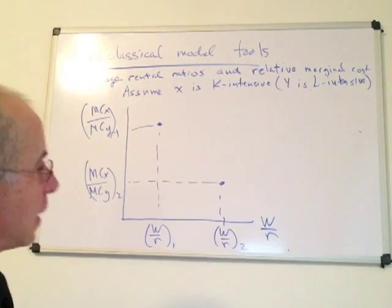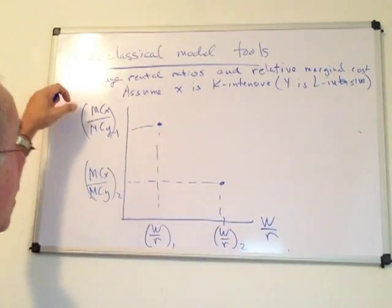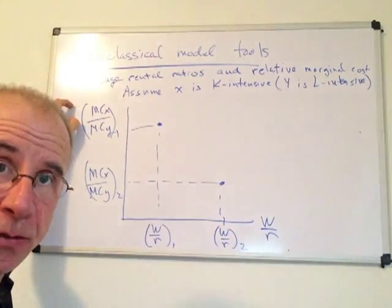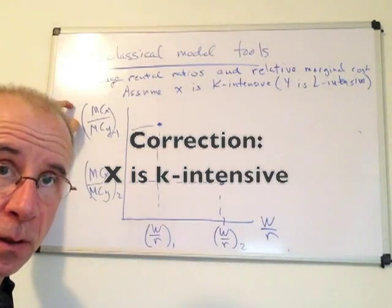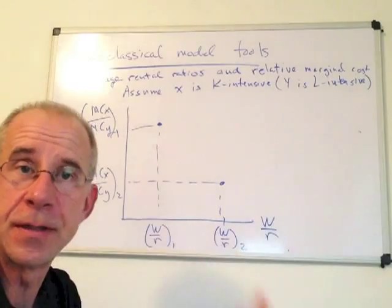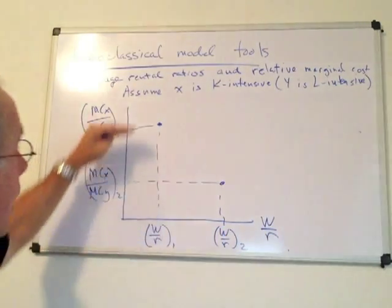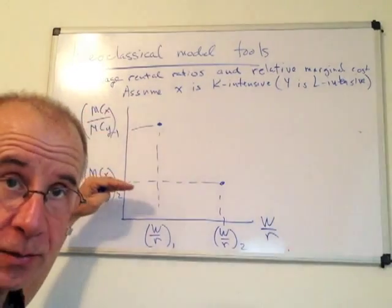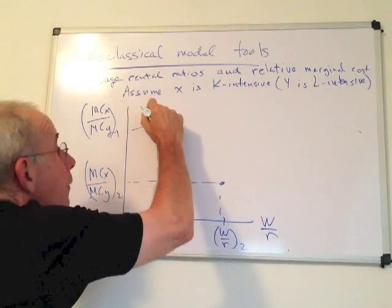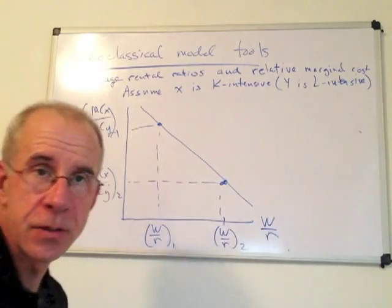So what we see is that there's going to be a negative relationship between these two when we have good X, the labor-intensive good, in the numerator. Now, if you combine all the different possible wage-rental ratios and all the possible relative costs of X, you will have this negative relationship.